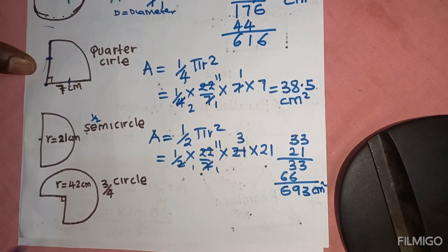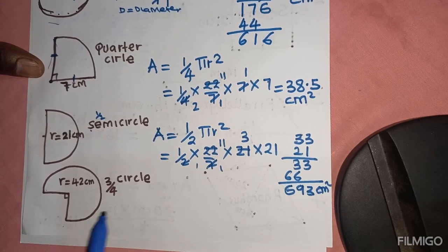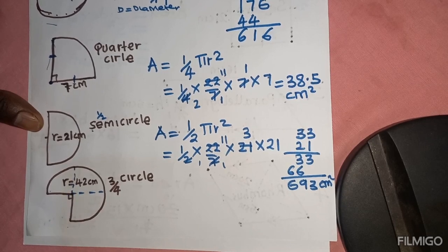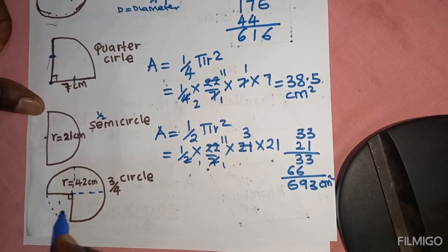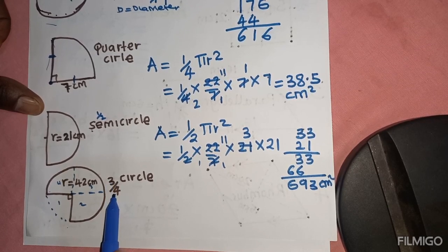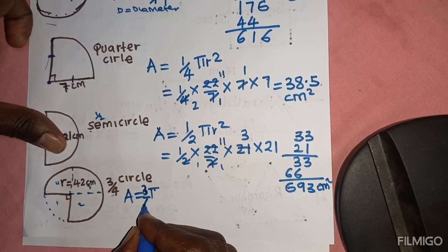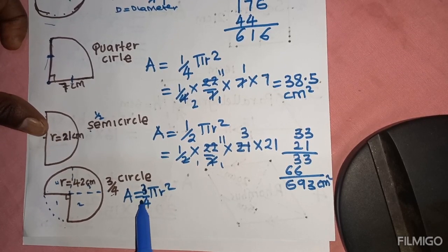The last area we are going to work on is the area of a three-quarter circle. When you divide a circle into four, you get quarters. This shape is three-quarters of a circle — it was a full circle and one quarter was removed, leaving three out of four. So when getting the area, it is three over four times pi times r squared. That is where three over four comes from — because the shape is three-quarters of a circle.